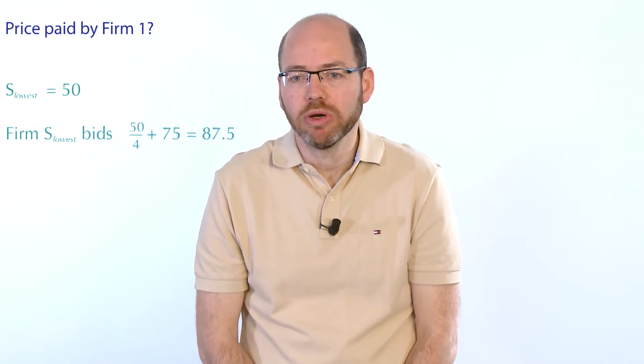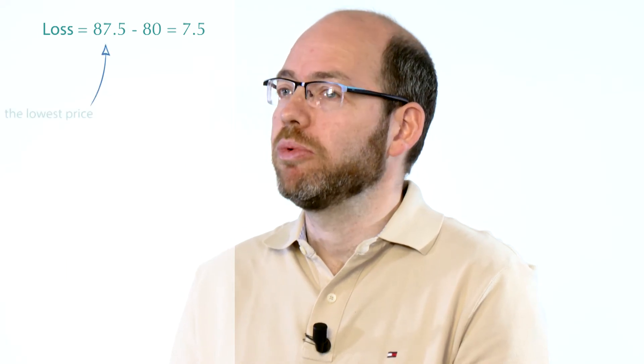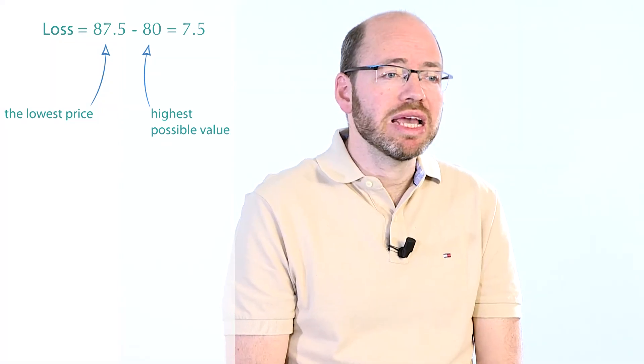What about the price paid by Firm 1? We consider the lowest possible price paid. The price is lowest when all the other firms have the lowest possible signal, since the price equals the second highest bid. With a signal of 50 million, a firm submits 50/4 + 75 = 87.5 million euros. So the lowest possible price is 87.5 million euros. This means that if Firm 1 wins the auction, an upper bound on its profit is actually a loss: 87.5 million is the lowest possible price it may pay, and 80 million is the highest possible value for the good. So it will lose at least 7.5 million euros — and in fact, even more. This is precisely what we call the winner's curse.